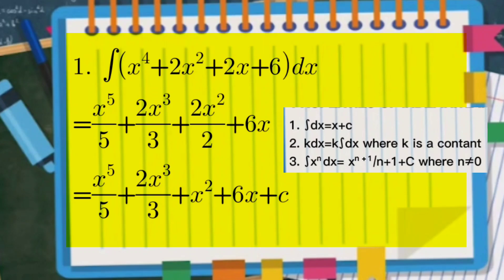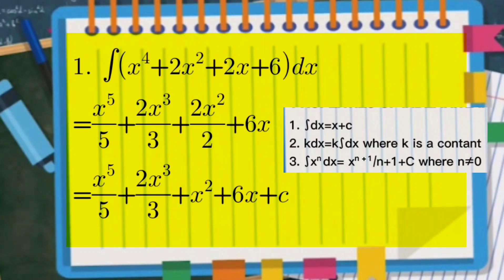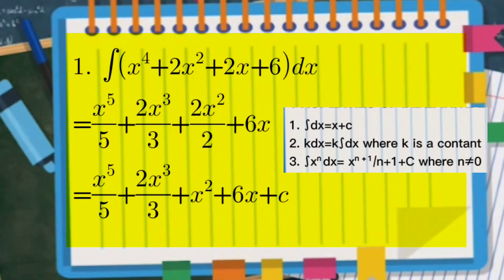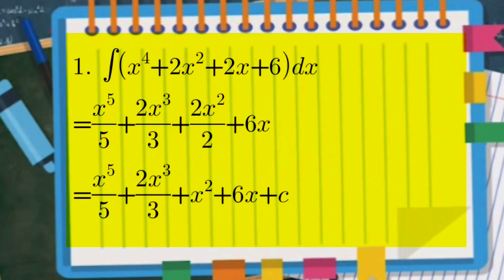Property number two states that k is a constant, and property number three states that the integral of x to the power of n dx is equal to x to the power of n plus one, over n plus one, plus C, where n is not equal to zero. Applying property number three to the term x to the power of four, we add one to the exponent and bring the power into the denominator.